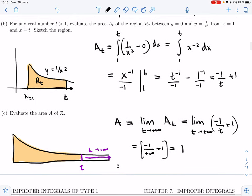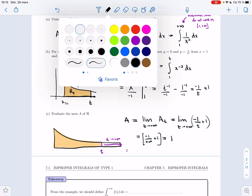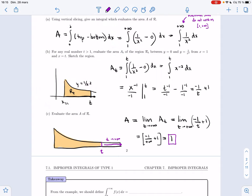So even though I couldn't really make sense of this, and even though the region keeps going forever, I can actually say that as t goes to infinity, the area approaches 1. So the area of my region is actually finite. I could cover it with a finite amount of paint.